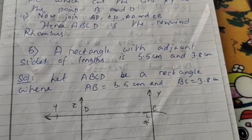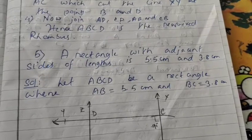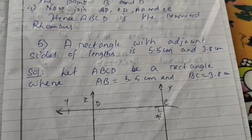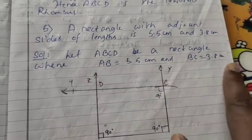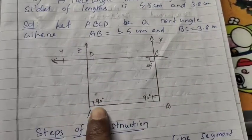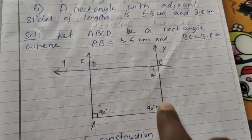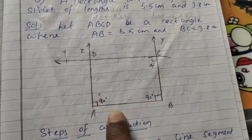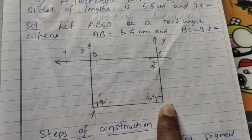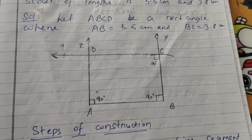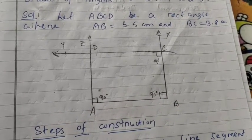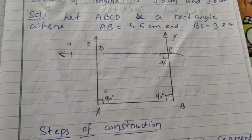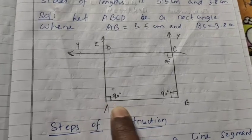For question 5, we have to construct a rectangle with adjacent sides of length 5.5 cm and 3.8 cm. Let us consider ABCD is a rectangle where AB is 5.5 cm and adjacent side BC is 3.8 cm. In a rectangle, both opposite sides are parallel and equal, and all angles are 90 degrees.